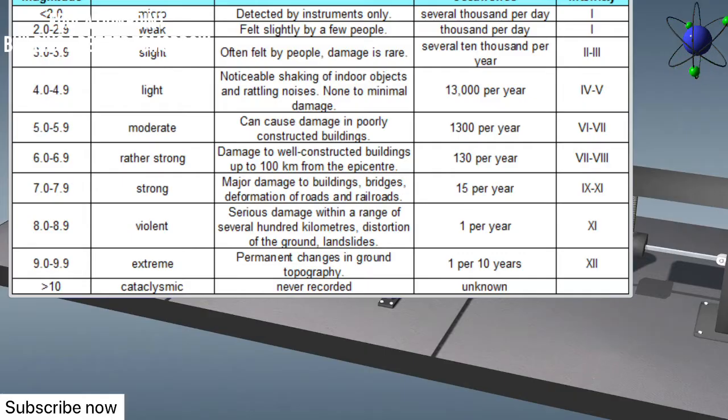The modified Mercalli scale, or MM, classifies earthquakes based on their intensity. This 12 degree scale shows the effects of an earthquake at a given location.